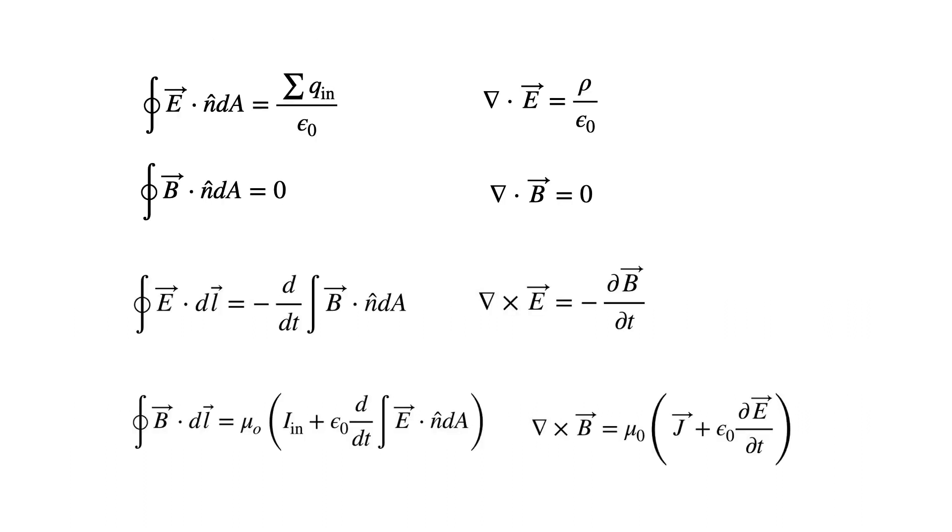If you wrote these down as equations, it would look like this. On the left side of the screen, we have the integral form of Maxwell's equations. The first one is Gauss's law, then Gauss's law for magnetism, then Faraday's law, then the Ampere-Maxwell law. On the right are the differential forms that don't deal with a finite amount of space. I just put these here for completeness. I don't expect you to understand these, but they do look cool. They show up on t-shirts.